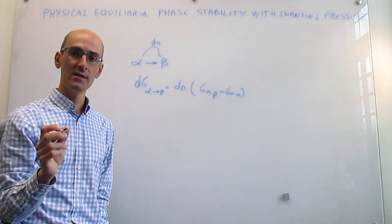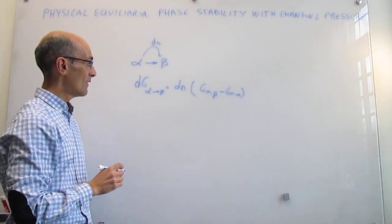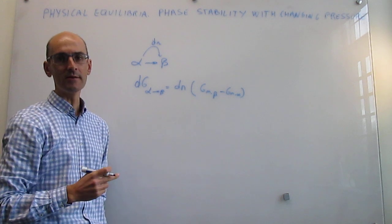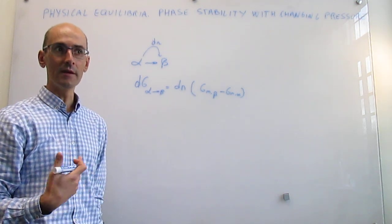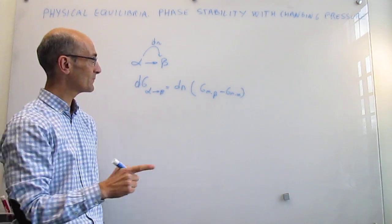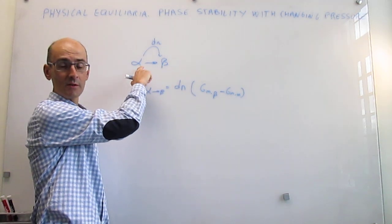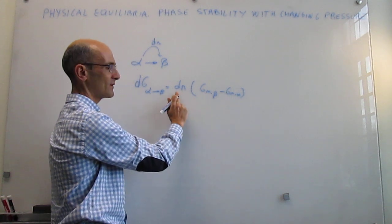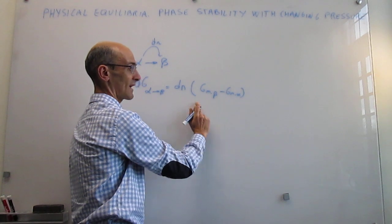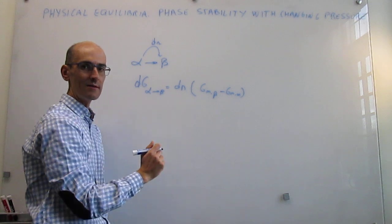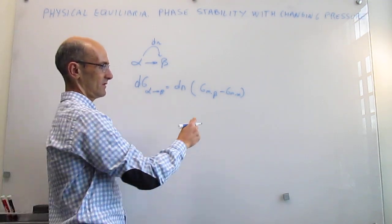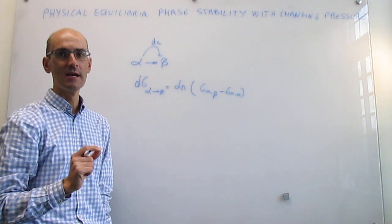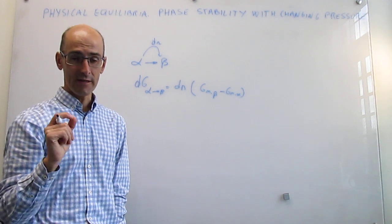Because phase transitions are isothermal and isobaric, we use the change in Gibbs energy as a criterion for spontaneity. If the change in Gibbs energy is negative at constant pressure and temperature, the phase transition is spontaneous, meaning beta is the stable phase. Since dn is never negative, the parenthesis must be negative — so the stable phase is the one with the lowest molar Gibbs energy.